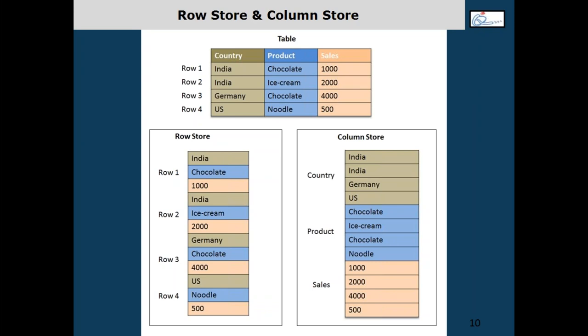Next query: SELECT DISTINCT countries FROM table — reading only one column. In row store, I have to jump to memory location 1, pick first country, jump to memory location 2, pick second country, jump to another, pick third, jump to another, pick fourth. But in column store, all country values are already in one contiguous memory location — just read them all at once. So column store is faster when reading only certain columns. When reading a complete record row store is faster; when reading a partial set of columns, column store is faster.